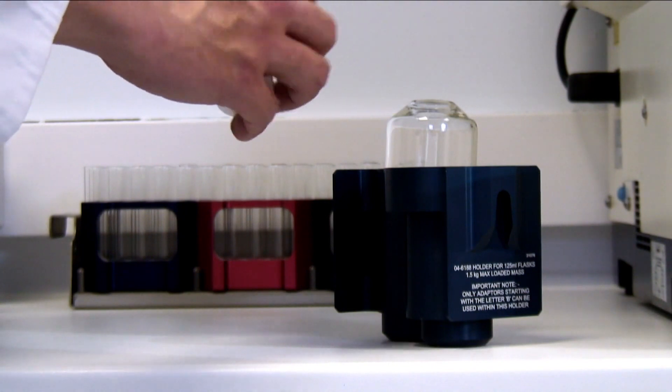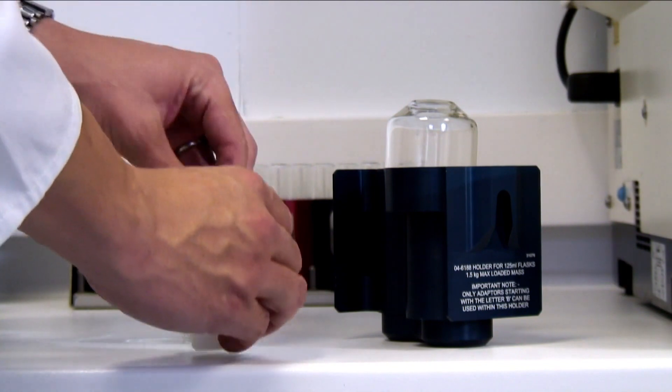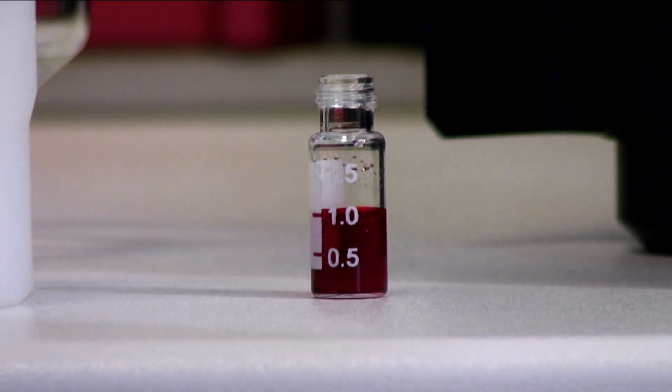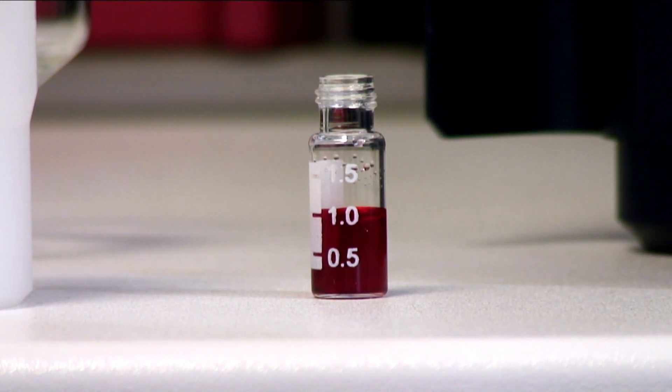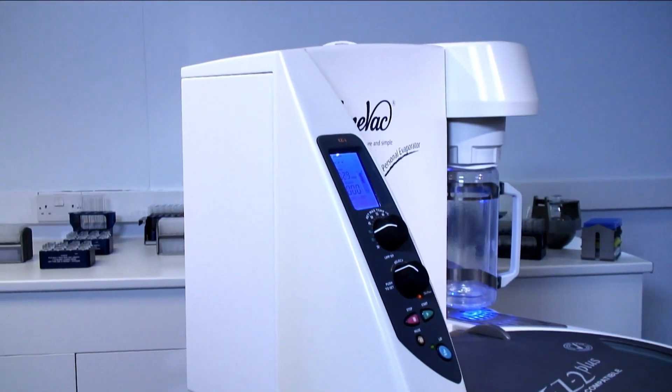Sample Genie enables a large volume to be concentrated directly into a vial of your choice. The design of Sample Genie means that the vial is insulated from heat, and therefore only the solvent in the flask dries.